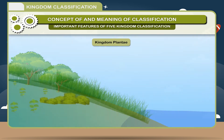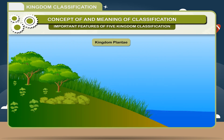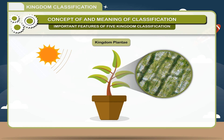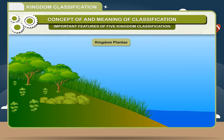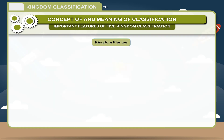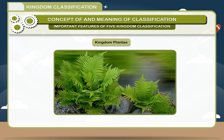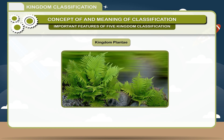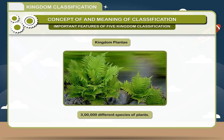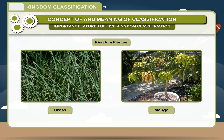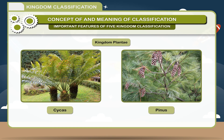Kingdom Plantae: Almost all plants are multicellular organisms. They are autotrophs, meaning they can prepare their own food and contain chlorophyll. They are of various sizes and shapes. Some plants are flowering plants, but non-flowering plants are also present. Kingdom Plantae contains almost 3 lakh different species of plants.